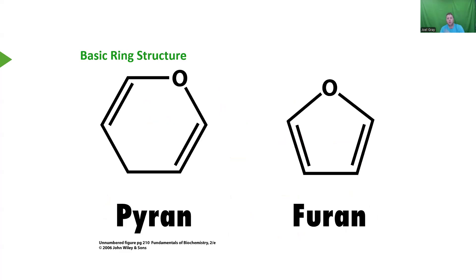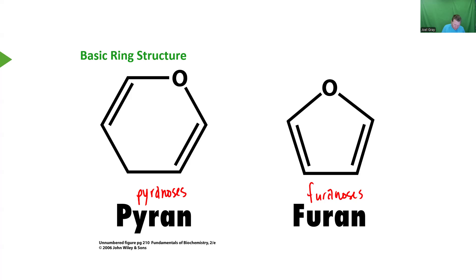An acetal and a ketal form when a hemiacetal reacts with an alcohol — that's in the context of making polysaccharides or disaccharides, which we'll get to in the latter half of this lecture. We have two major types of cyclic sugar rings: a pyran ring and a furan ring, giving pyranose or furanose.